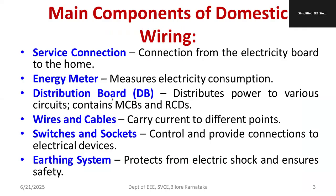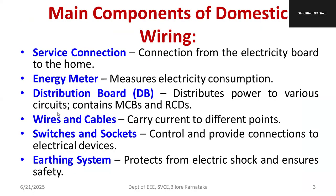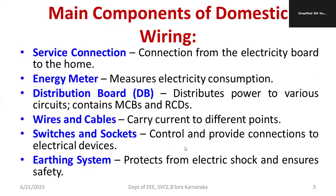Next is the distribution board (DB). Its purpose is to distribute power to various circuits, loads, MCBs, and RCDs — that is the purpose of the distribution board, and we go for panel wiring. Wires and cables are next: wires are the bare conductors, while cables provide insulation. There are different types of cables such as VIR cable, PVC cable, etc.